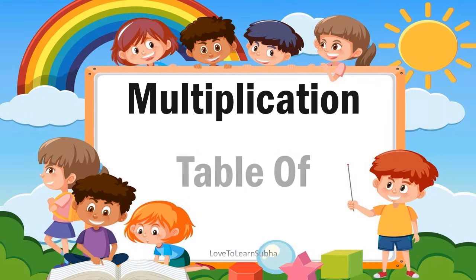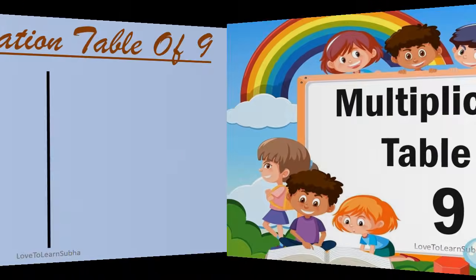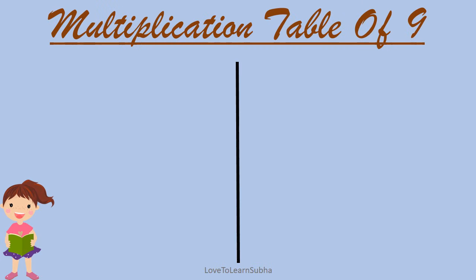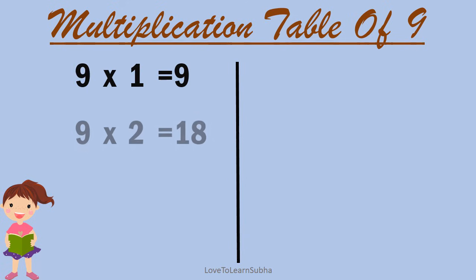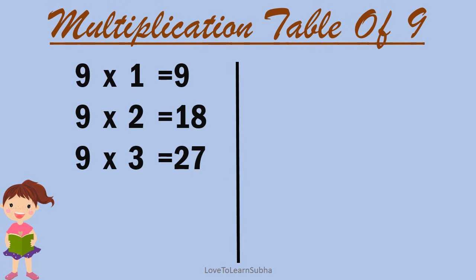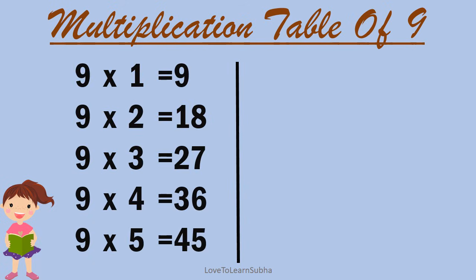Multiplication table of 9. 9 ones are 9, 9 twos are 18, 9 threes are 27, 9 fours are 36, 9 fives are 45.